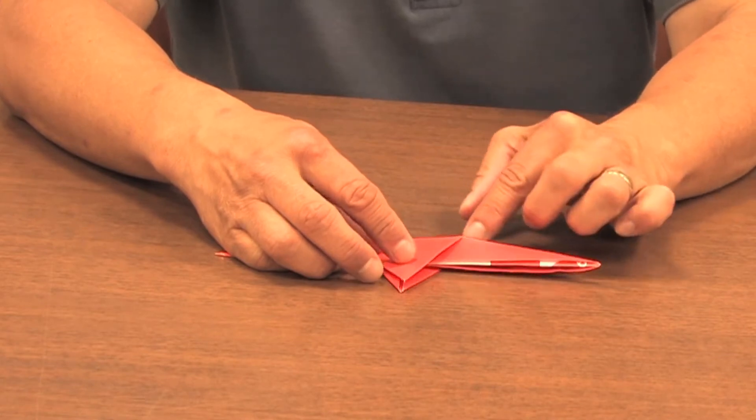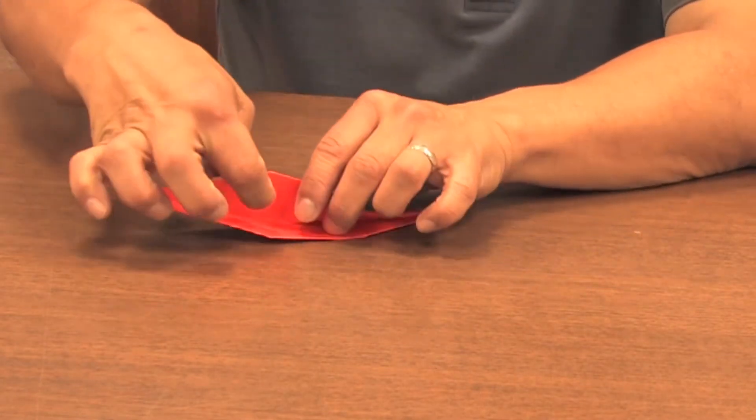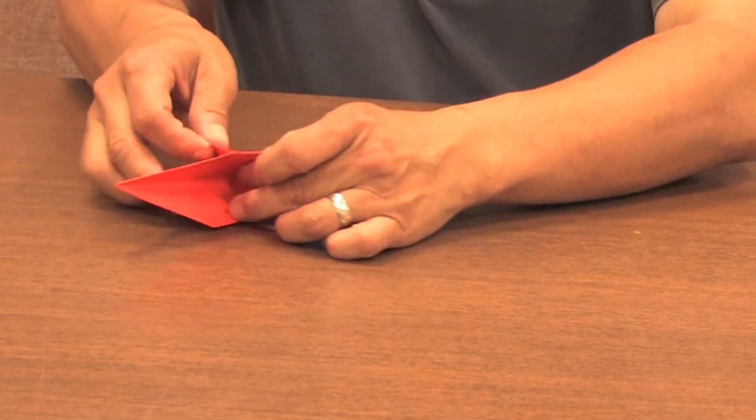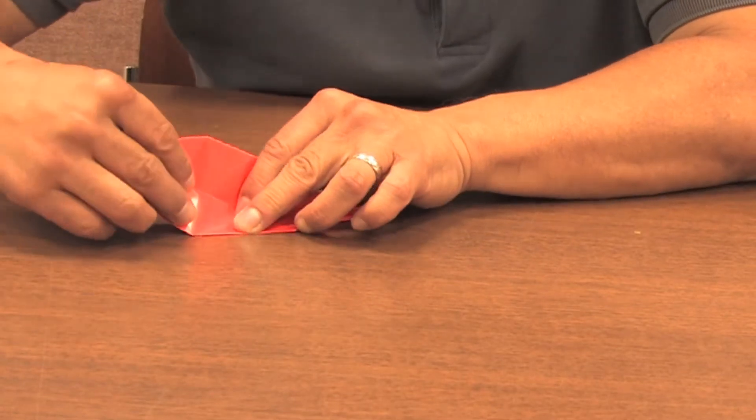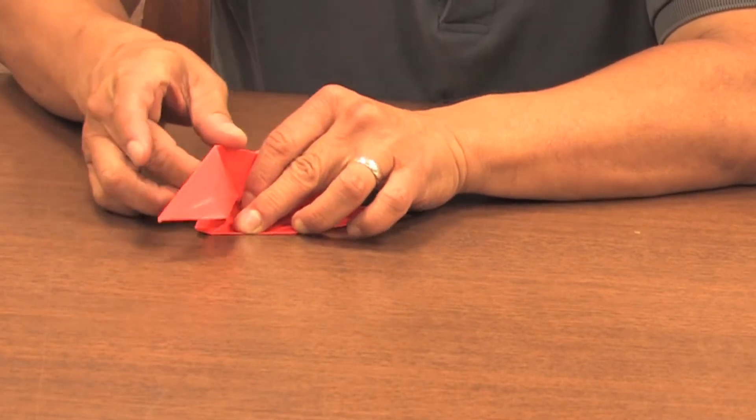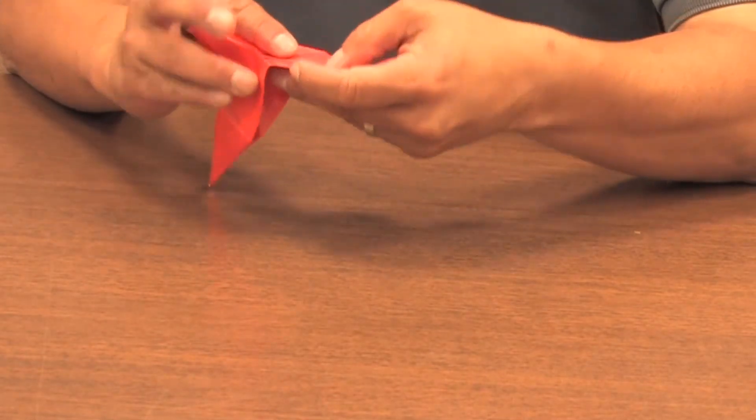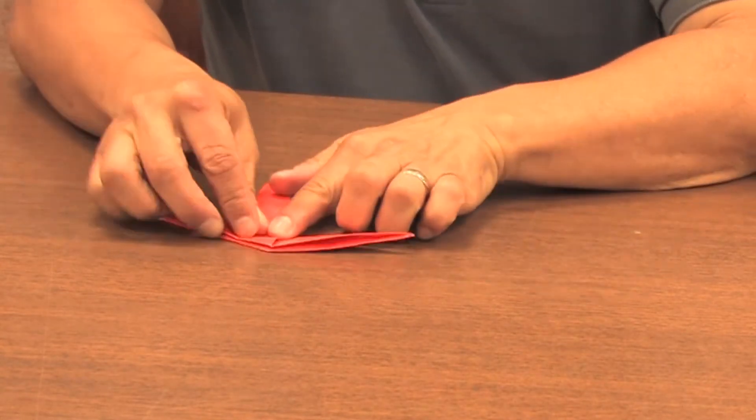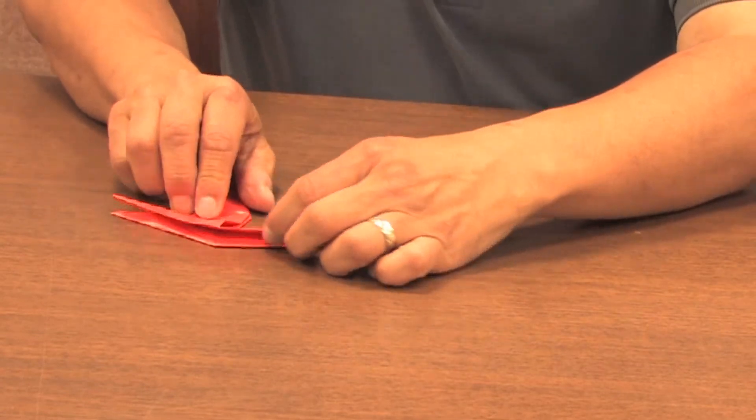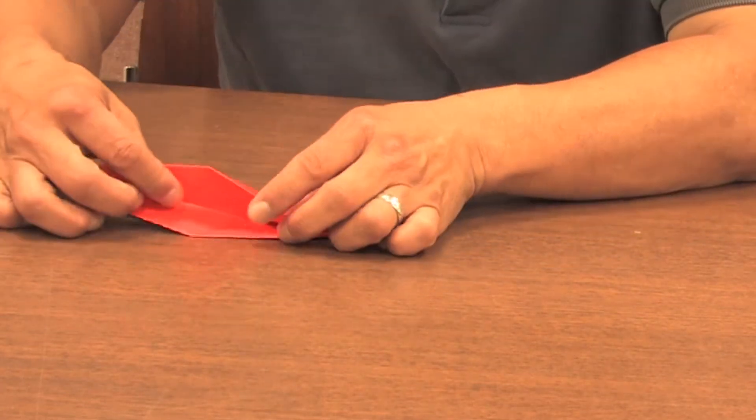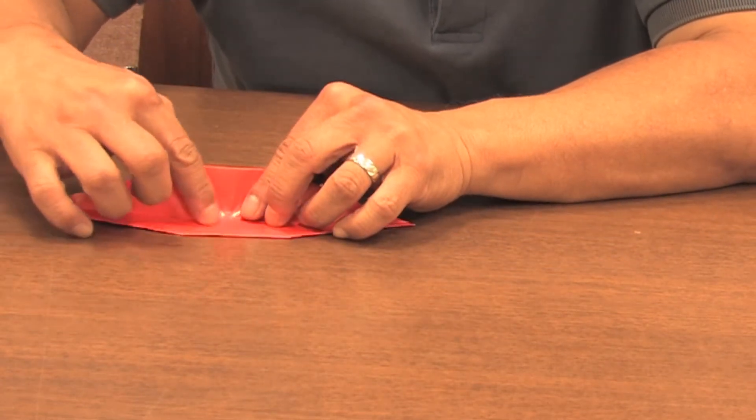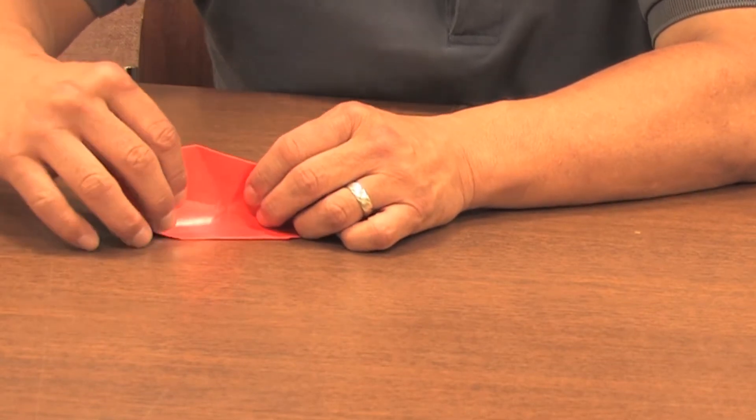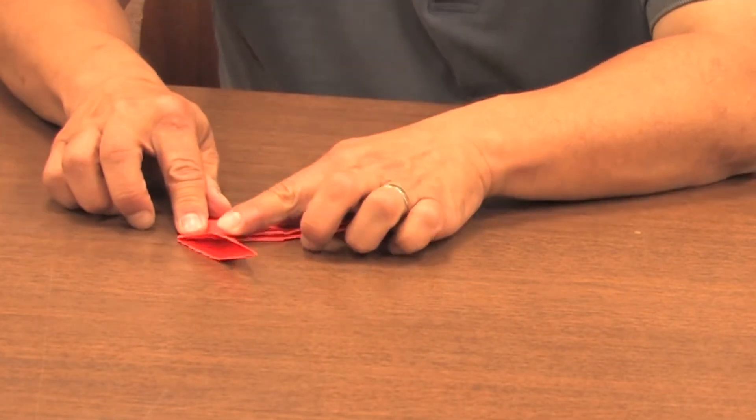To make the head, we're going to do a reverse fold along this line here by bringing this back so it goes straight up like that. Okay. So to make that we start from here and we went along this diagonal line here and just did a reverse inside fold like that.